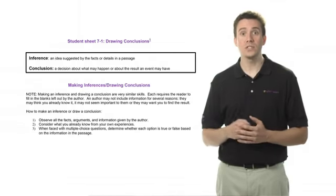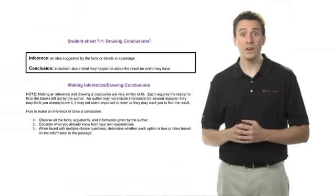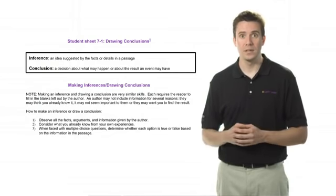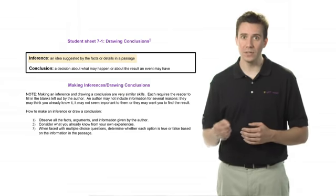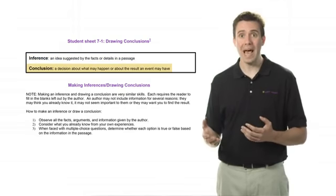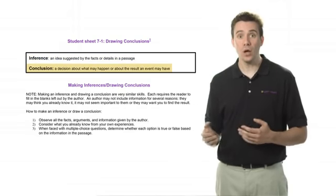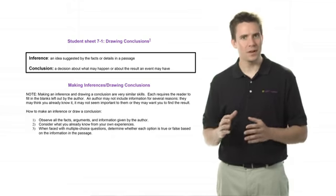In compare it to an inference. Take a look at Student Sheet 7-1. At the top, you'll see the definitions of conclusion and inference. As you can see, an inference is an idea suggested by the facts or details in a passage, and a conclusion is a decision about what may happen or about the result an event may have. These two things are very similar, but they are not the same.